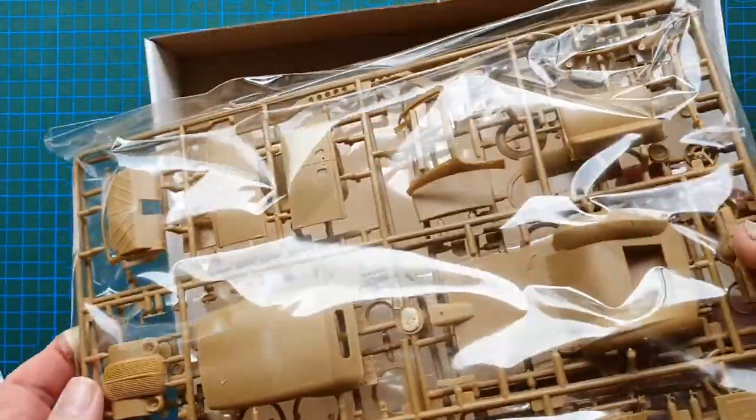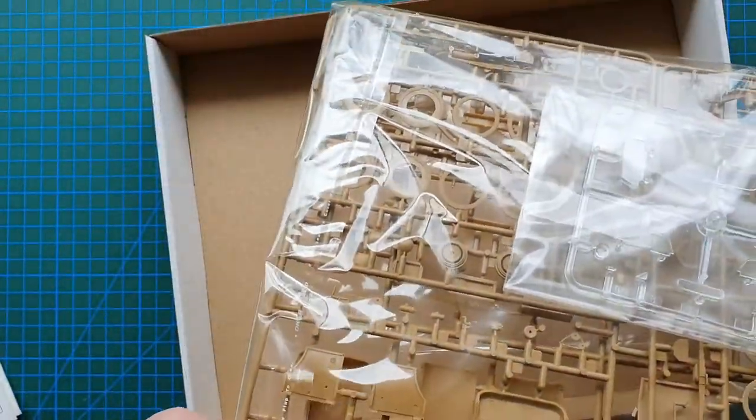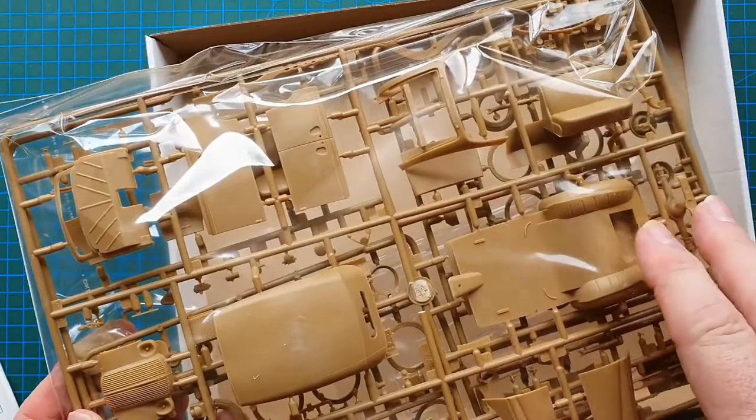Next bag is sprues. This is all in together. The good thing about ICM is they use resealable bags. So there's your clear parts and your body of the vehicle.